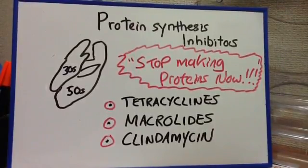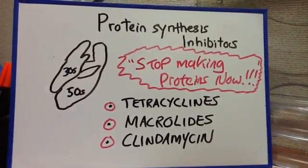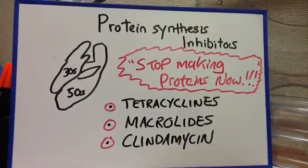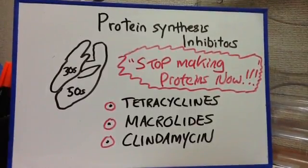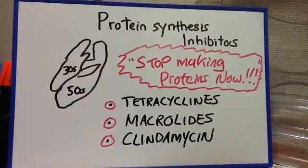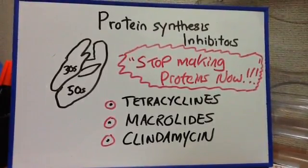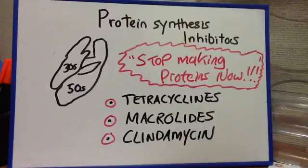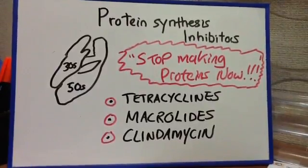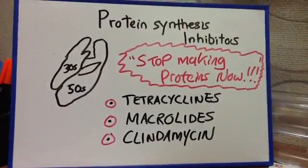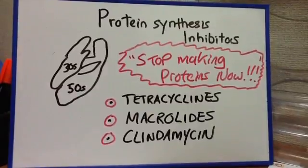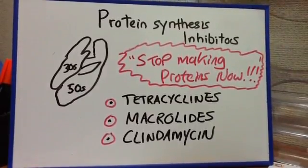Moving on, we're going to start talking about the protein synthesis inhibitors. These are focusing on the ribosomes of the bacteria, and they are binding to, or interfering with the ribosomes, and either the 30S ribosome or the 50S ribosome.